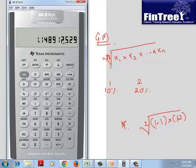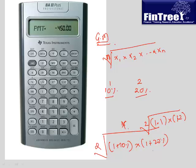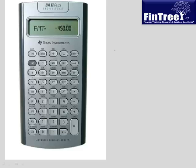Let's try another example: 30% in year 1, 40% in year 2, 50% in year 3. The arithmetic mean is 40%, but you haven't actually earned 40% per year. To find the true average, calculate the geometric mean: there are 3 values, so take the cube root.